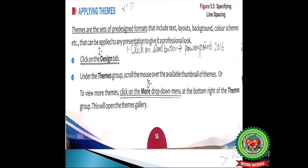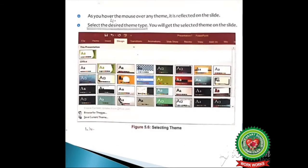Steps to apply themes: First step is click on Start button, then PowerPoint 2016. Remember that steps for opening PowerPoint 2016 can vary according to the version of Windows you are using. Second step is click on the Design tab. Third step is click on the More drop-down menu. Step number four is select the desired theme.